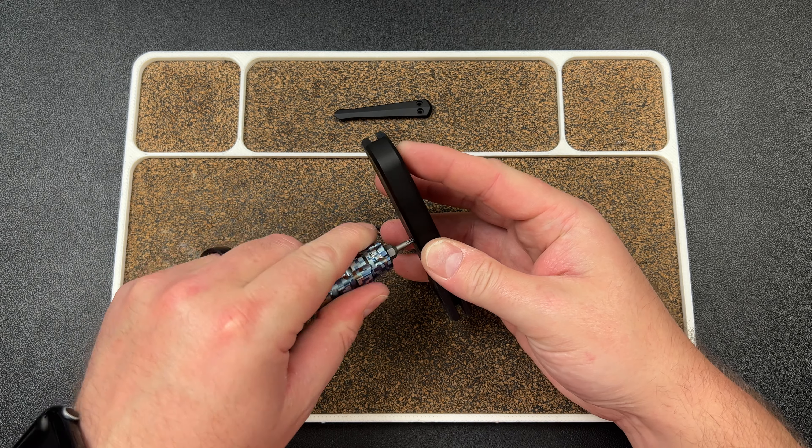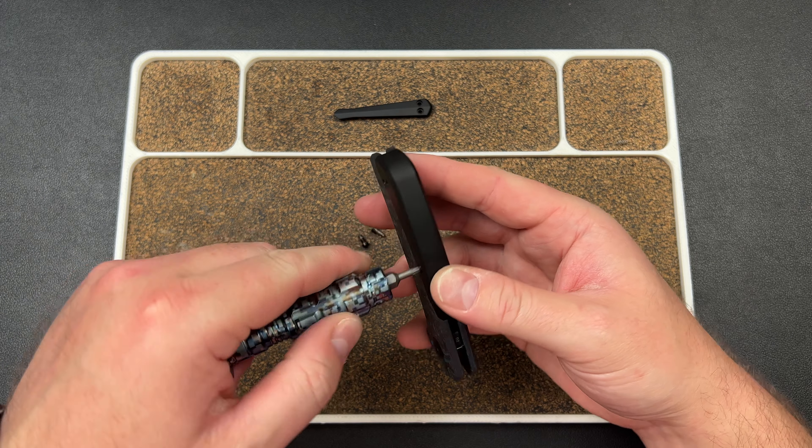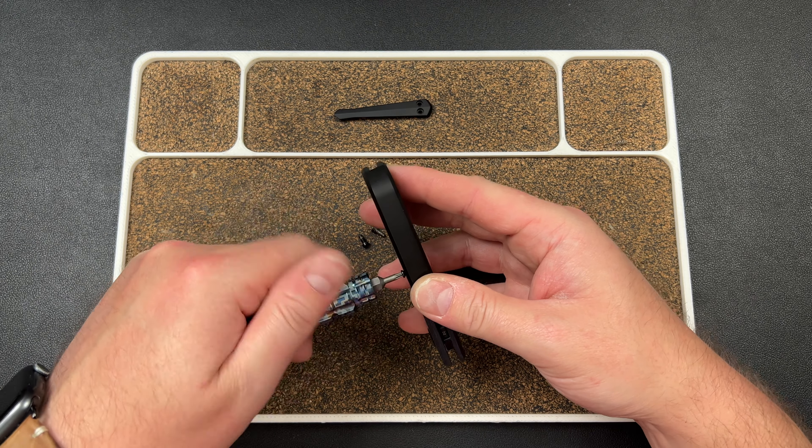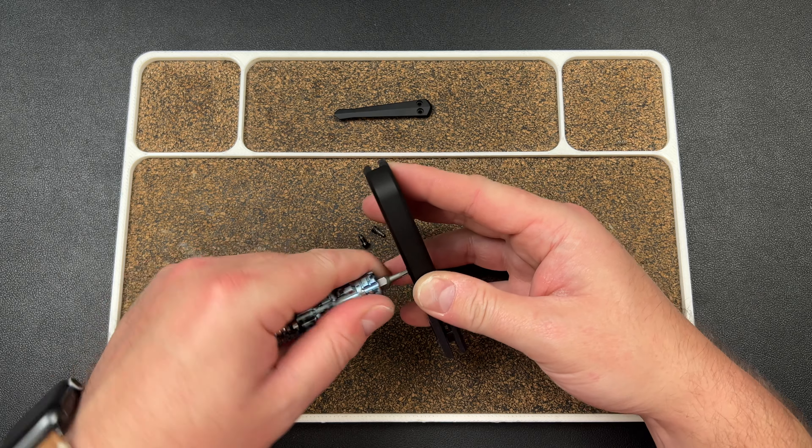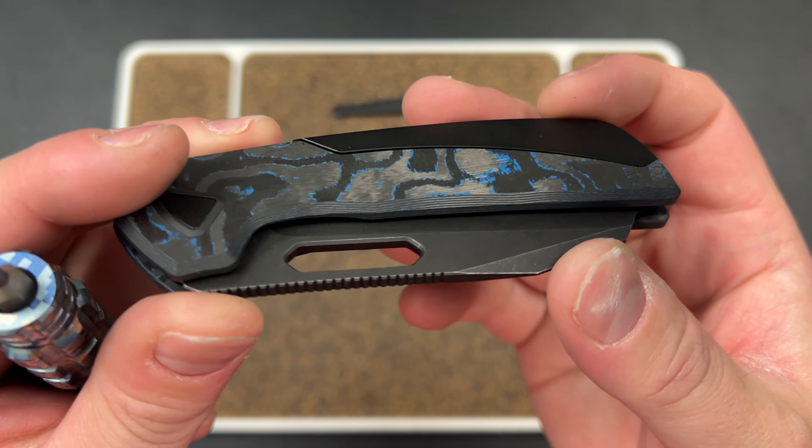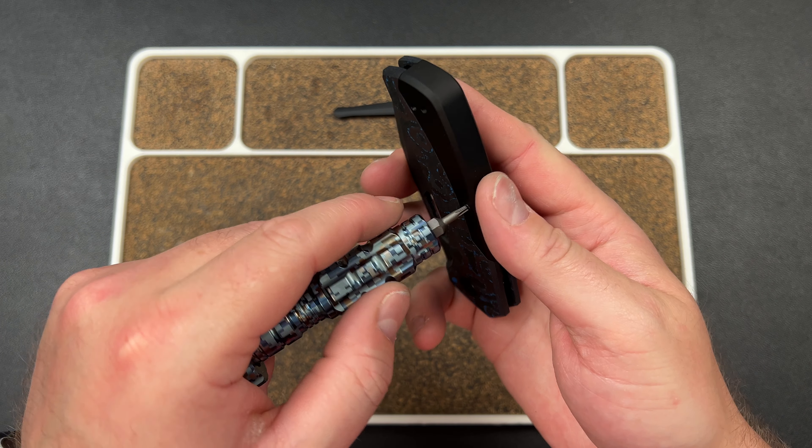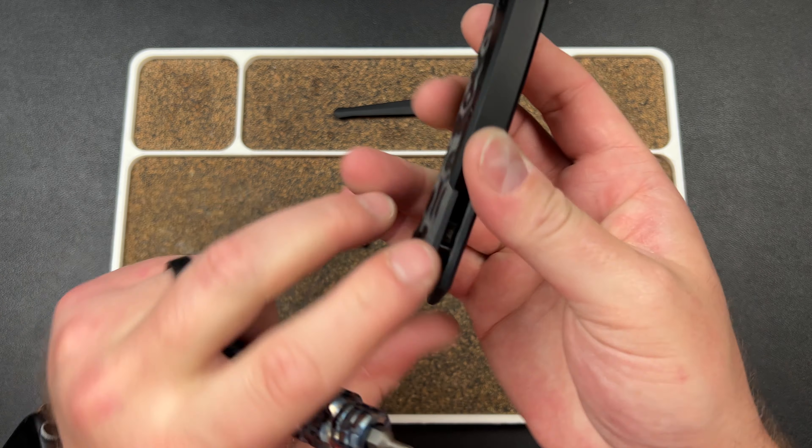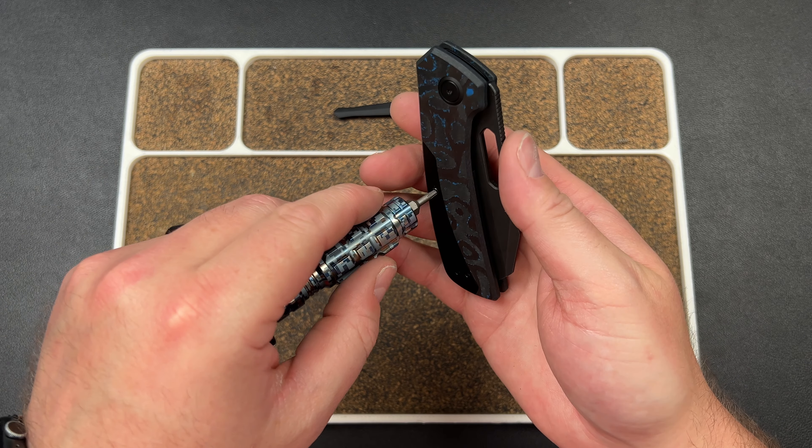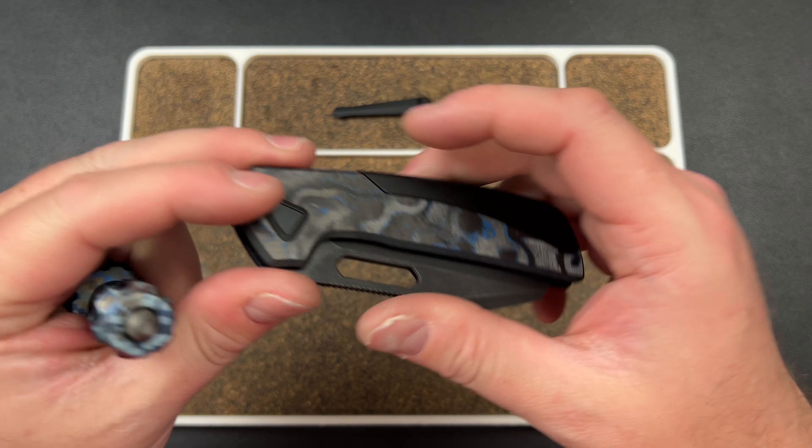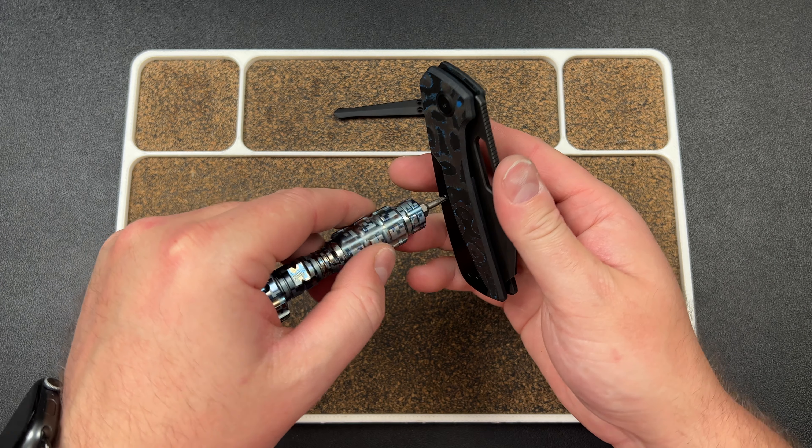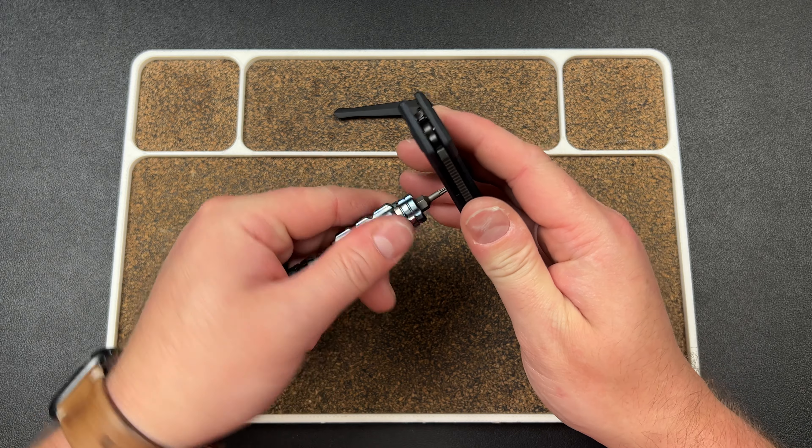You take your body screw here and you tighten that down. You'll see as I tighten it, this side will start raising up. If I back it out, this side will flush out a little bit. So we need to dial that in a little bit more.